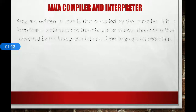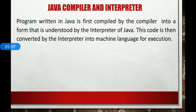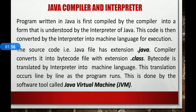Now let's discuss about the Java compiler and interpreter. We already know that a translator is a program that converts a program written in any programming language into machine language that is executable by the computer. Java is a machine-independent language, meaning programs written in Java run on all computers without making any changes for different machines. This is because Java works with two translators — compiler and interpreter. The program written in Java is first compiled by the compiler into a form understood by the Java interpreter, and this code is then converted by the interpreter into machine language for execution.